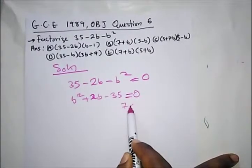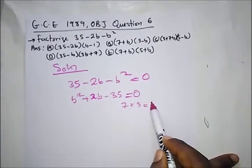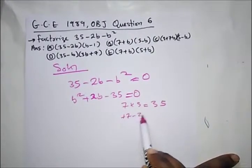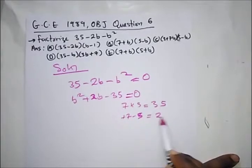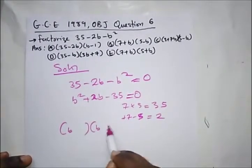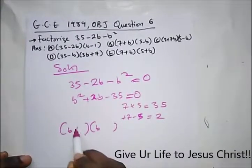7 times 5 equals 35, and plus 7 minus 5 is equal to 2.